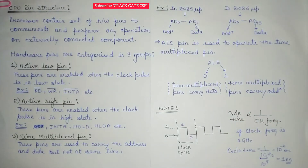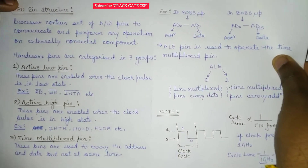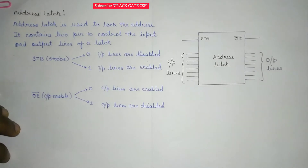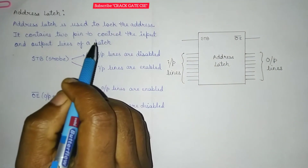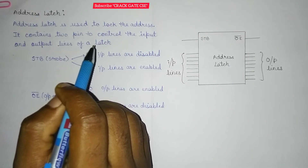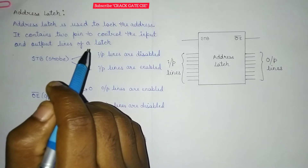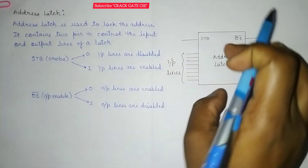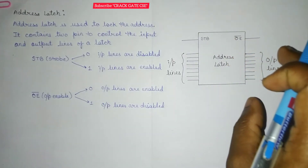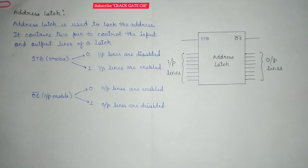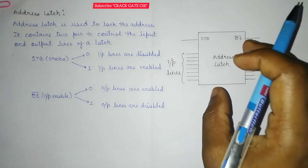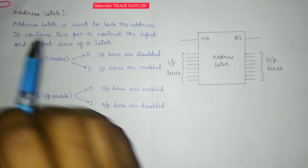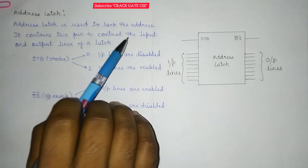Let's quickly move on to the address latch, where we will be using this ALE. I will explain in the memory interfacing section when this ALE will be used. So what is address latch? This address latch is used to lock the address. Whenever a CPU wants to execute an instruction on a specific address, we put that address into the address latch. The address latch will lock the respective address so that further execution can be performed and no other CPUs or any other device will access that particular address in the meantime — the particular address will be locked for the CPU.